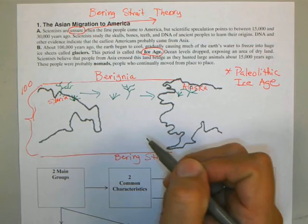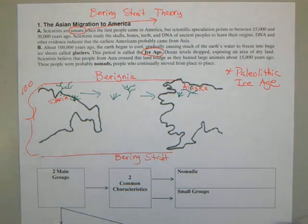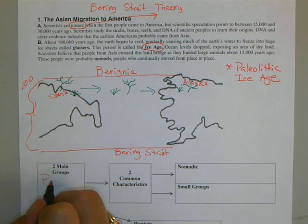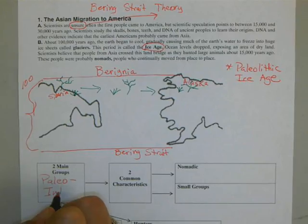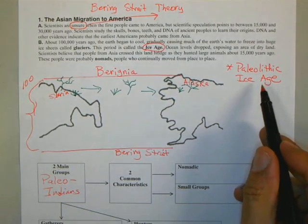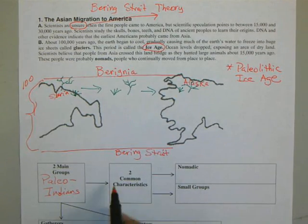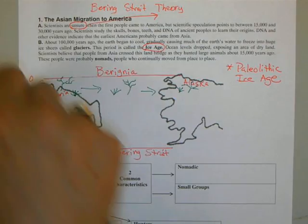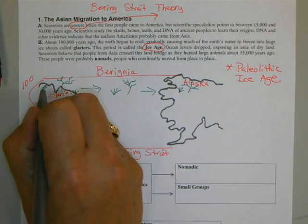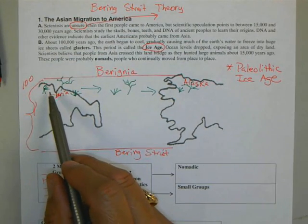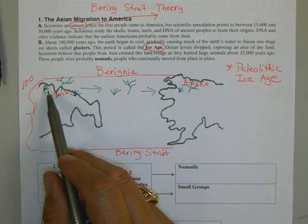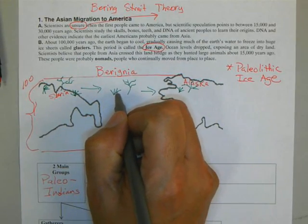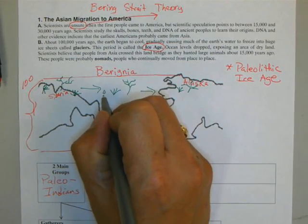At the same time, you're going to have two main groups coming into what is today the Americas. These groups are going to be known as the Paleo Indians. The word 'Paleo' refers to the Paleolithic Ice Age. The first group are the gatherers — they're going to be eating vegetation, fruits, nuts, berries, or small lizards, whatever they can catch. And because they're following their food source.